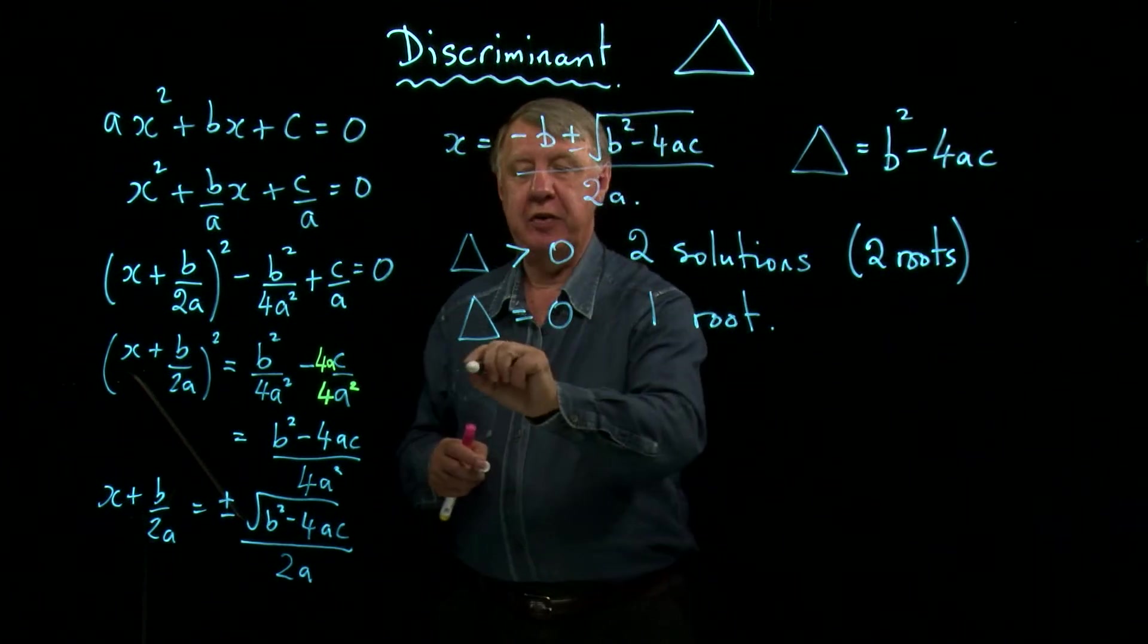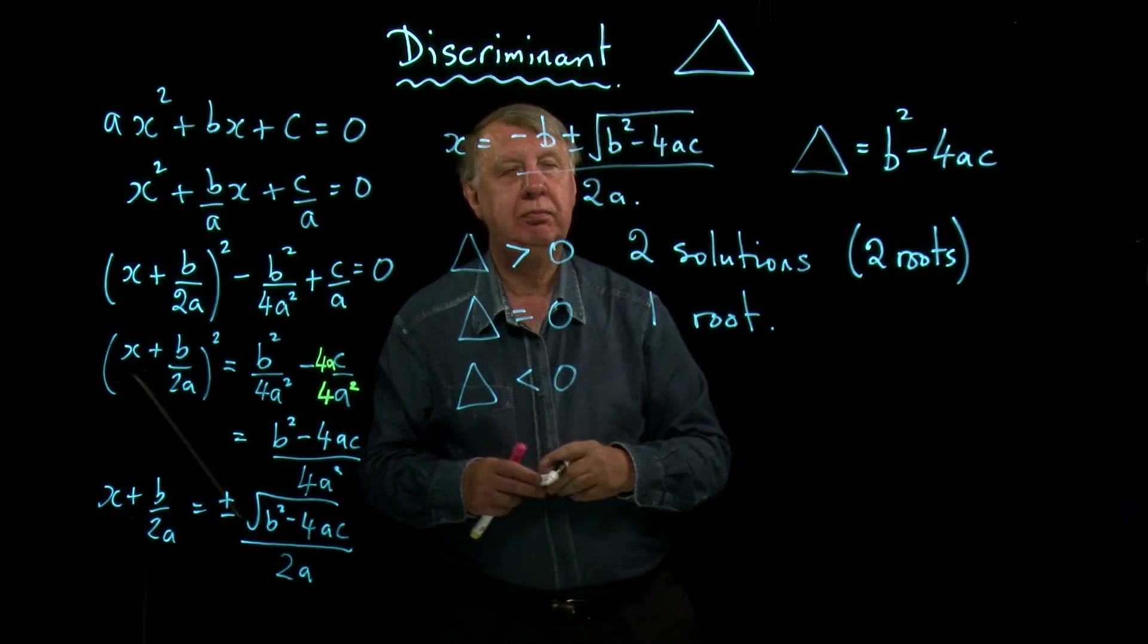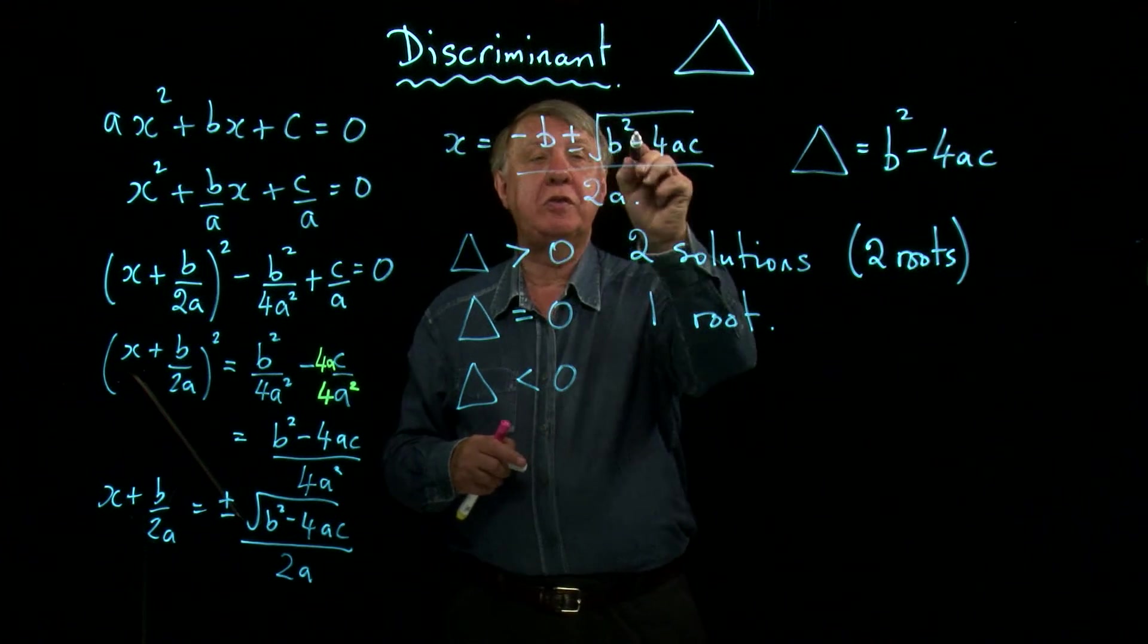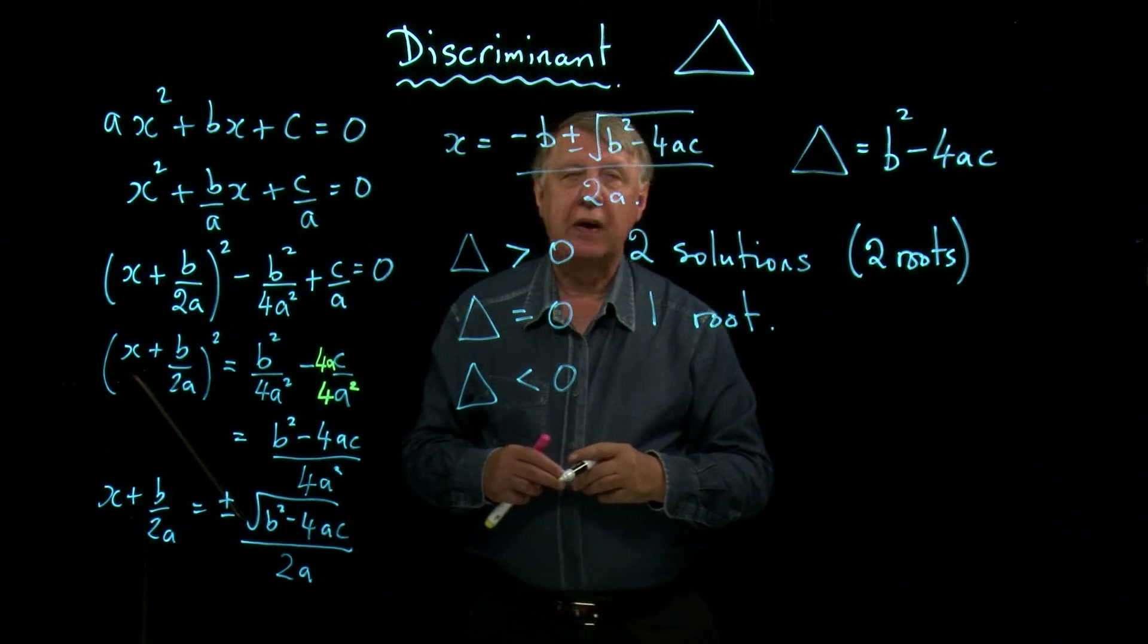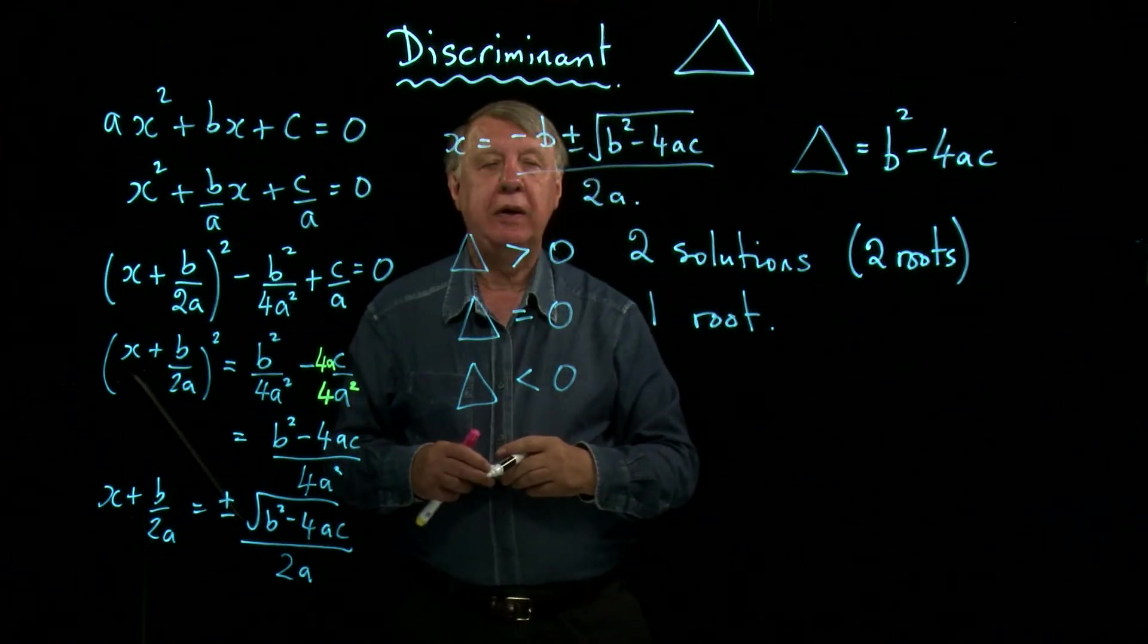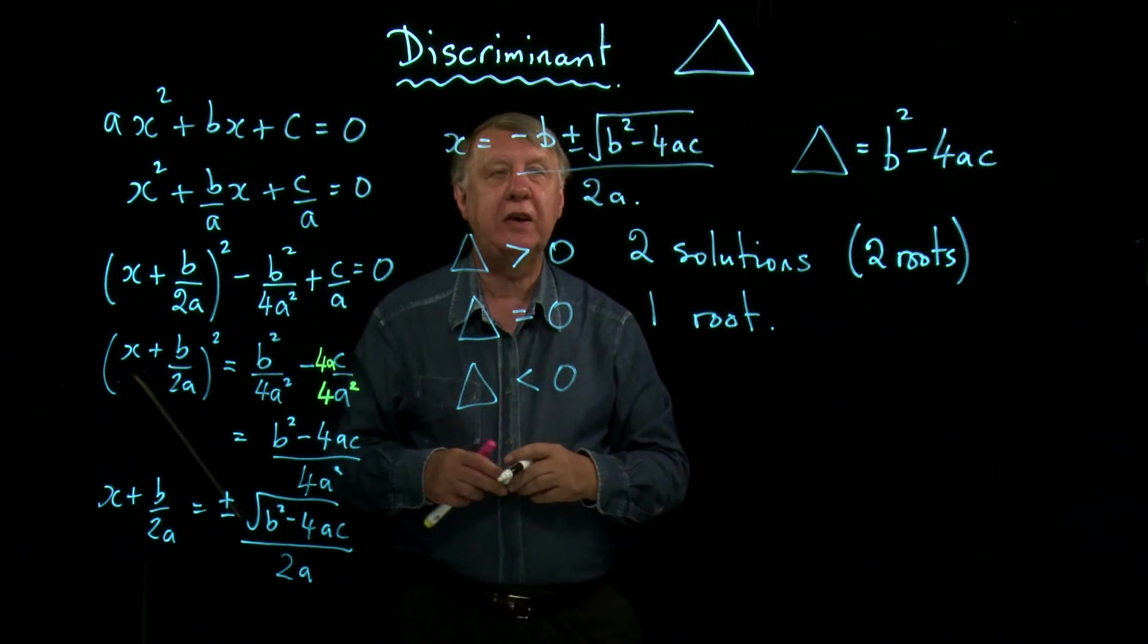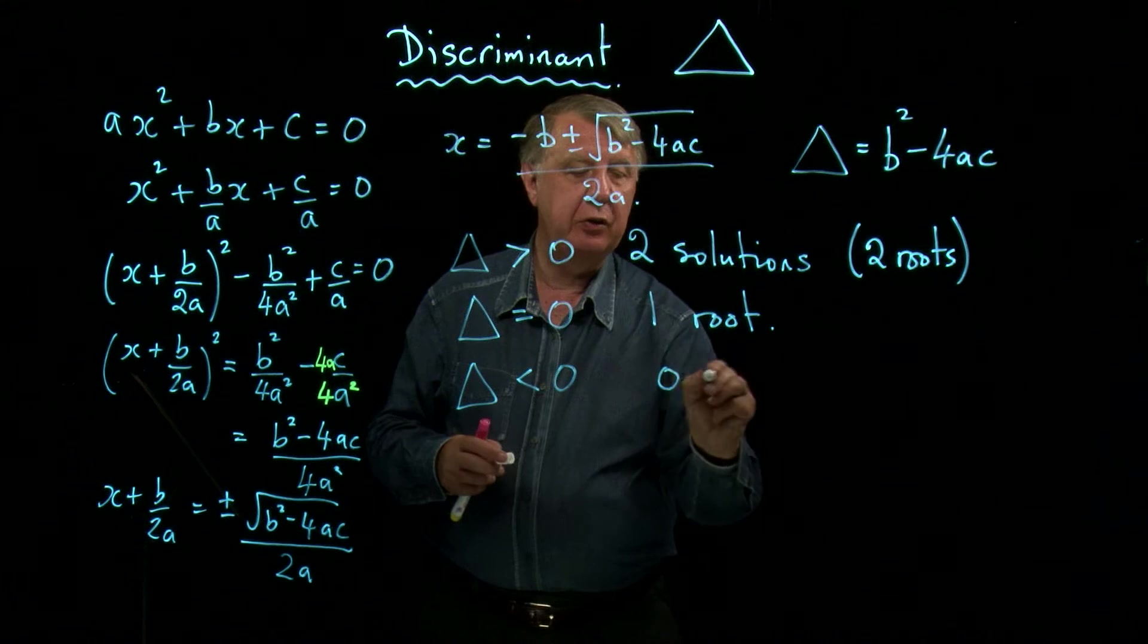Finally, if the discriminant is negative, well then I'm trying to find the square root of a negative number. Now at this stage, you can't do that. In higher mathematics, there are ways of getting round this. But at this stage, you can't do it. So that means there are no solutions.